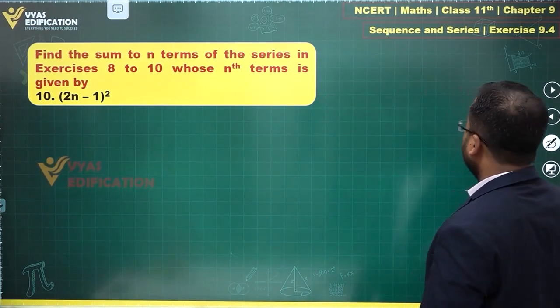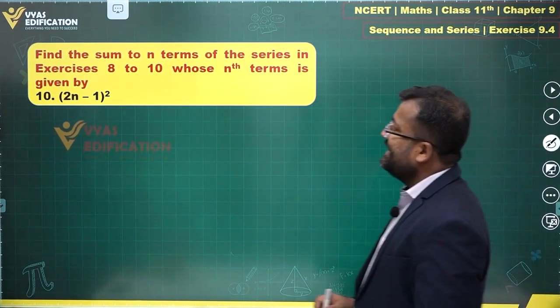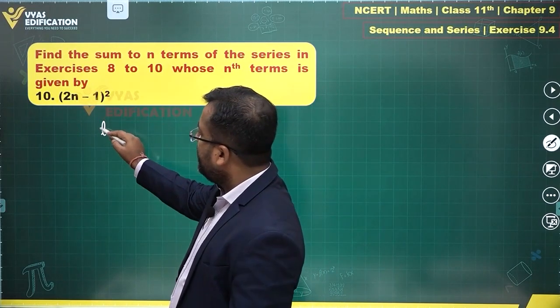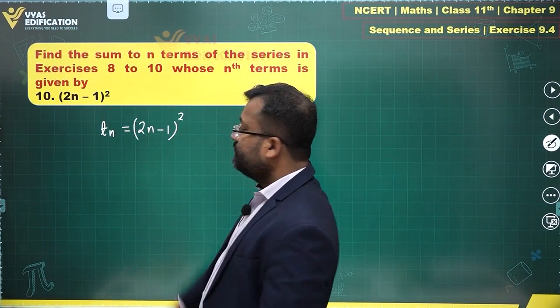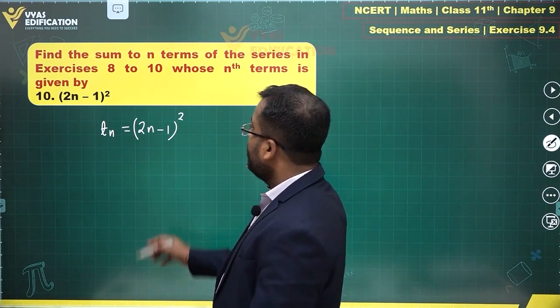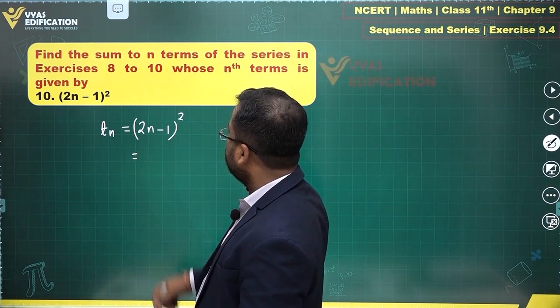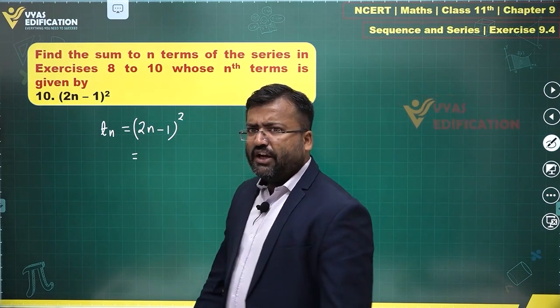In the 10th question we are given (2n-1)² as the nth term, so tn = (2n-1)². How will we handle this? There are two ideas of handling this.